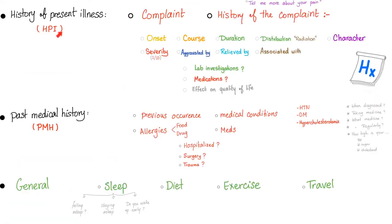To memorize the HPI, group onset, course, and duration together (duration has a D — go with distribution), then character and severity together, then the prepositions: aggravated by, relieved by, associated with, and then labs and medications together. The history of present illness includes the complaint, onset, course, duration, distribution, character, severity, aggravating and relieving factors, associations, lab investigations, medications, and how this is affecting the quality of your life.